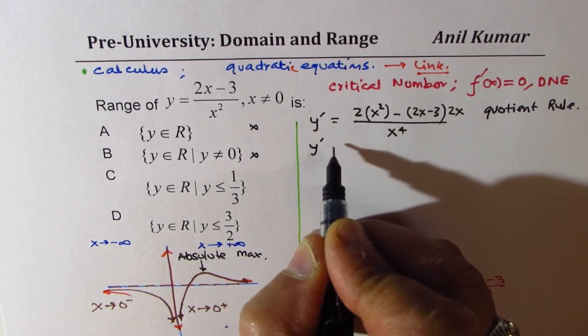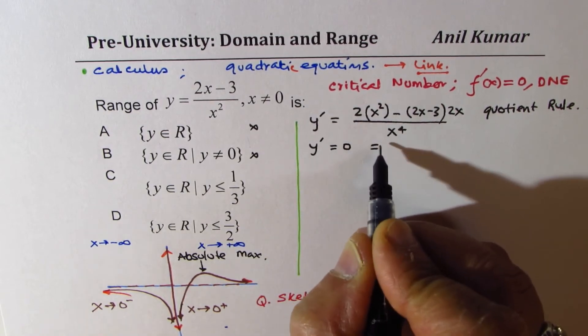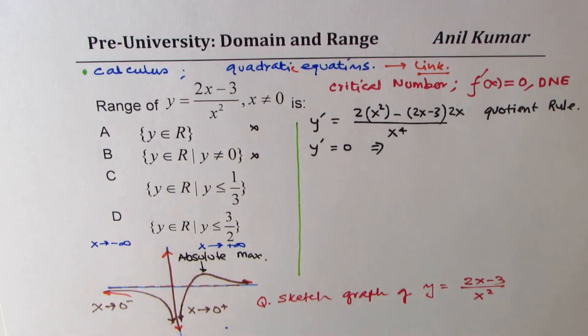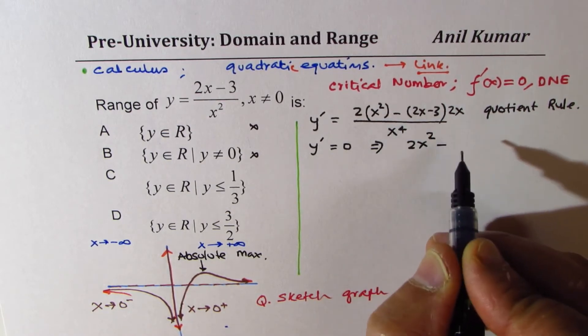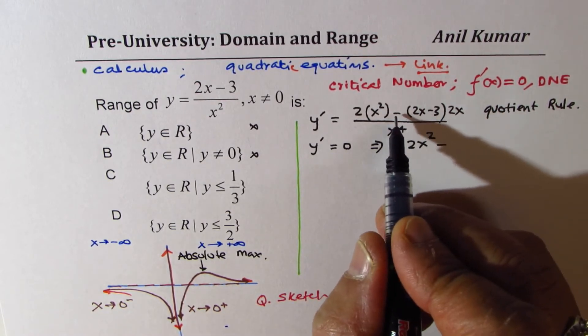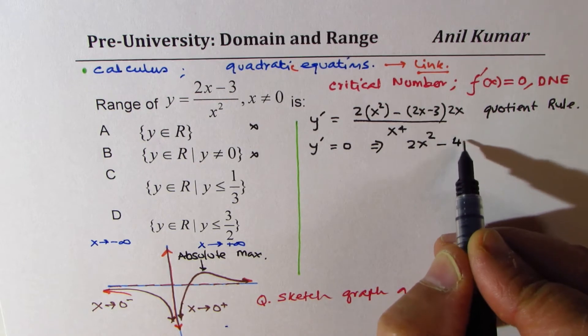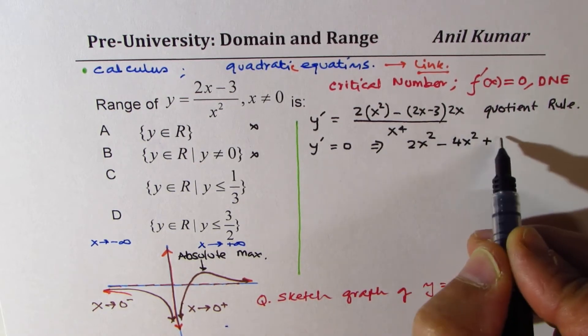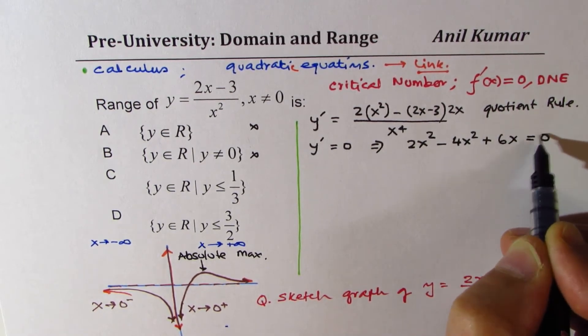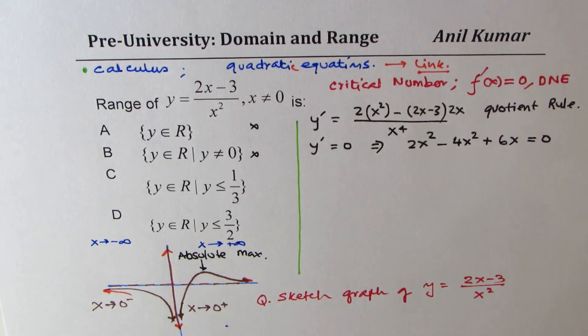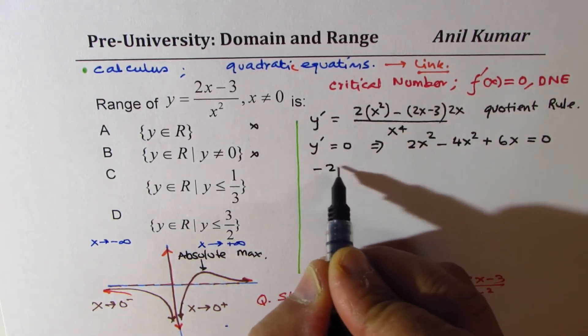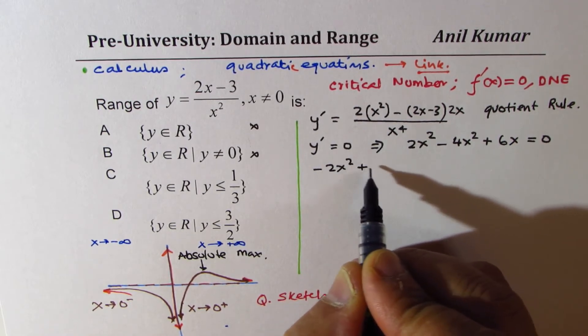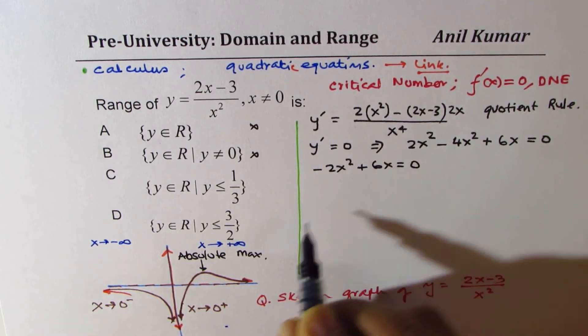Now, for critical number, y dash should be equal to 0. So that means the numerator should be 0. That means 2x square minus, if I open this bracket, I get 4x square plus 6x should be equal to 0. Now, let's try to solve this.